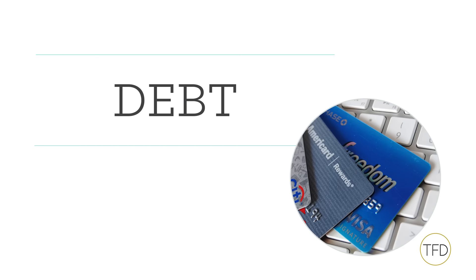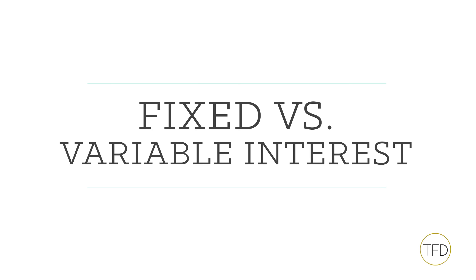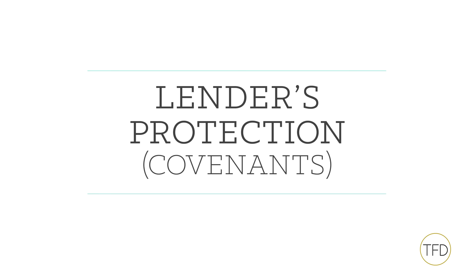Debt is something you've definitely heard of, and chances are you might be living with it yourself. So you probably already know that debt means a loan that needs to be repaid, usually with interest. Debt can come in the form of bank loans or bonds, and each one has different features, such as the order in which they're repaid — or seniority — what rights the lenders have with regards to the assets of the borrowers, also called security, whether the interest is fixed or variable, and which legal provisions are included to protect lenders, known as covenants and other terms.